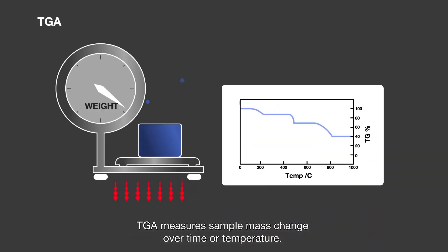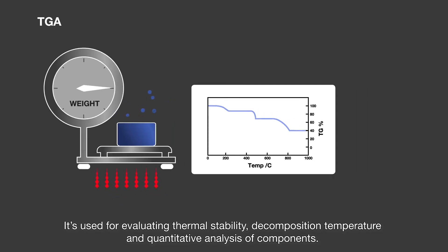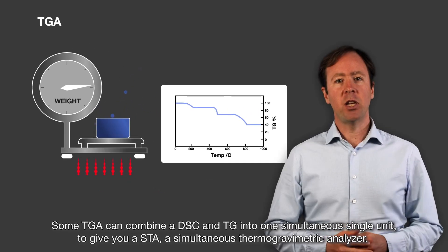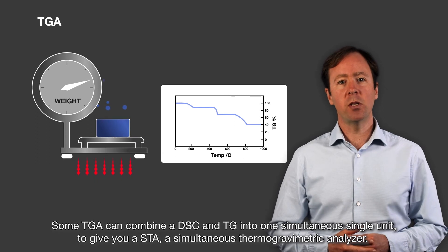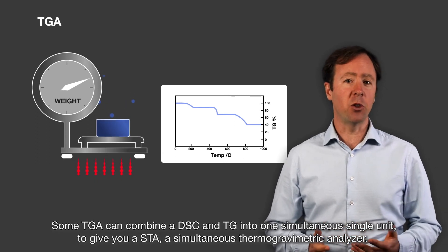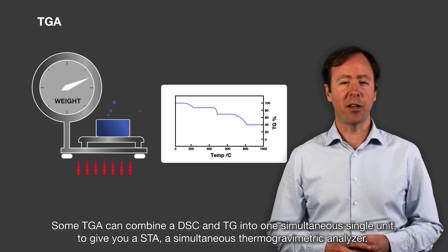TGA measures sample mass change over time or temperature. It's used for evaluating thermal stability, decomposition temperature and quantitative analysis of components. Some TGA instruments can combine DSC and TGA into one simultaneous single unit to give you a STA, a simultaneous thermal gravimetric analyzer.